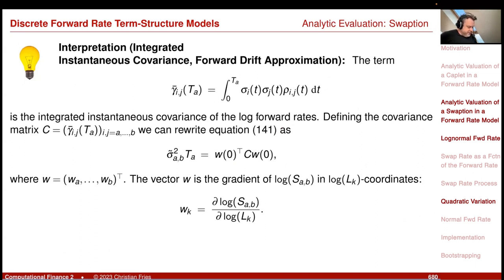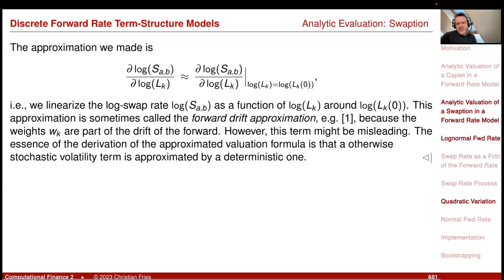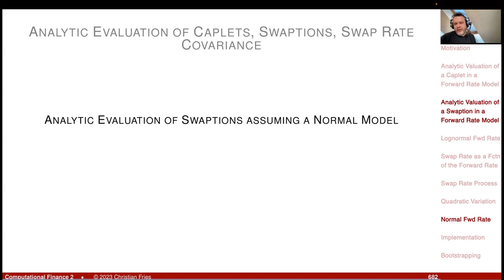This is a very nice analytic formula: the squared integrated swap rate volatility equals the integrated forward rate covariance weighted by the gradient vector. The approximation we made — replacing the stochastic weights with their value at time zero — is sometimes called the 'forward drift approximation' or 'freezing of drift,' although we are really freezing this projection vector, not the drift itself.